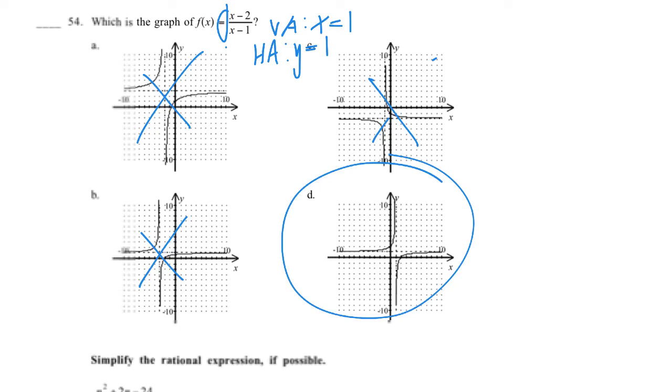The only graph with the correct asymptotes is d. If you've got two equations with the same asymptotes, two graphs with the same asymptotes, you could plug in. In this case, you could plug in 0 and find out if I plugged in 0 minus 2 and 0 minus 1, I get negative 2 over negative 1, which is a positive 2. And I would look for which graph has that point 0 comma 2.